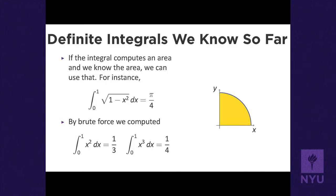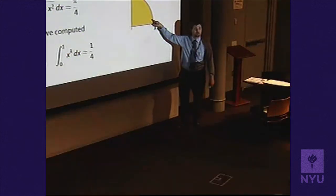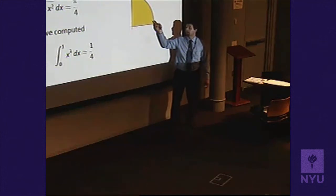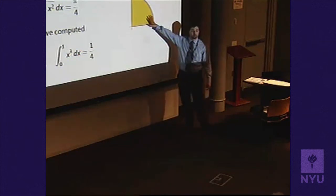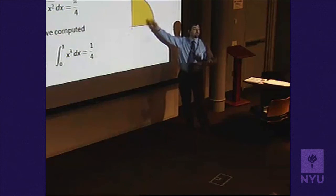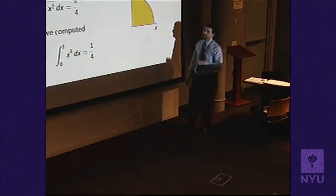We also know that integrals compute area. If I have a function that traces out a region whose area I already know, I can use that to deduce the integral. For example, the function √(1 - x²) traces out a quarter circle. The area is a quarter of π r² = π/4. So that integral equals π/4 by area considerations.